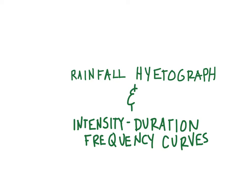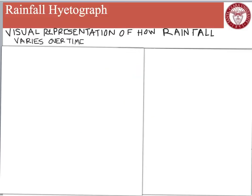In this video, I'm going to do two things. First, I'm going to talk a little bit about rainfall hyetographs, which are basically just a visual representation of a rainstorm. And then I'm going to detail intensity duration frequency curves and show how we can use historic rainfall to predict future storms. A rainfall hyetograph is a visual representation of how rainfall varies over time.